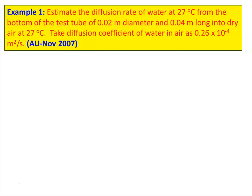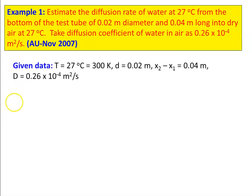We take example number 1. Estimate the diffusion rate of water at 27 degrees Celsius from the bottom of a test tube of 0.02 meter diameter and 0.04 meter long into dry air at 27 degrees Celsius. Take the diffusion coefficient of water in air as 0.26 into 10 power minus 4 meter square per second. This is from Anna University question paper, November 2007.